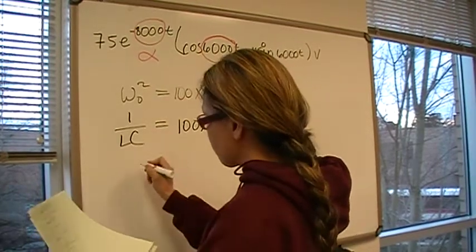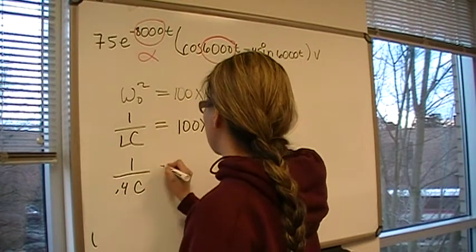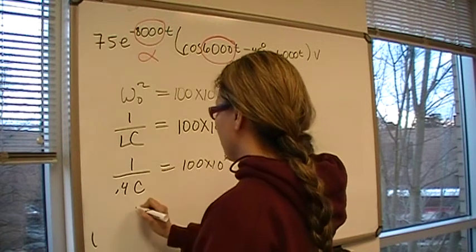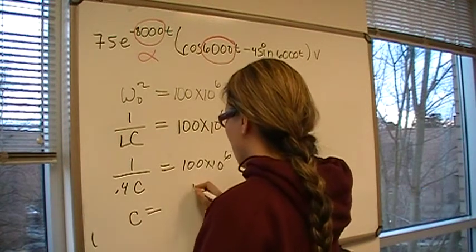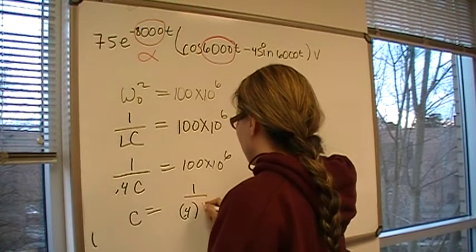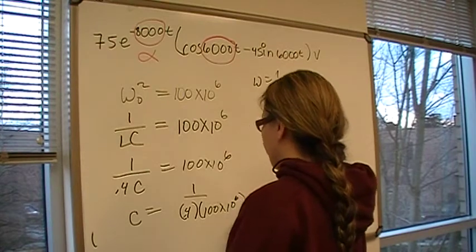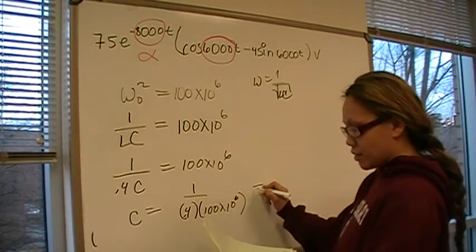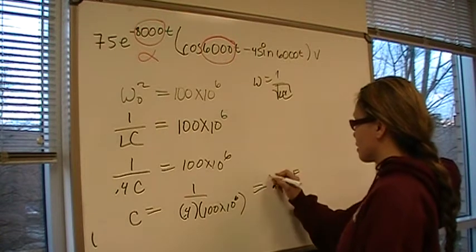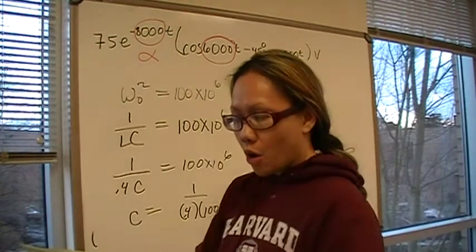Cross-multiply, we have 1 over 0.4C equals 100 times 10 to the 6th. So C is going to be 1 over 0.4 times 100 times 10 to the 6th power, and that should give you 25 nanofarads. That's the answer for part A.